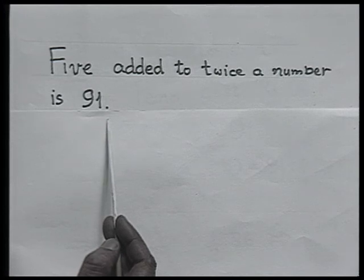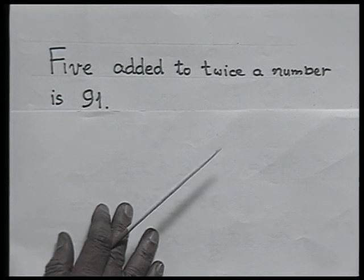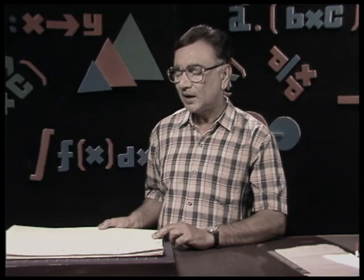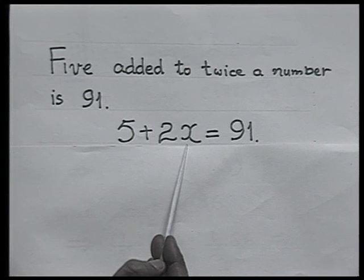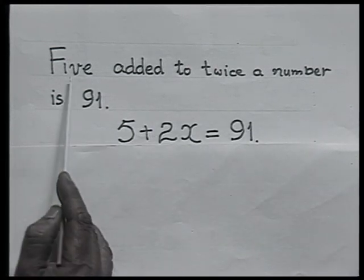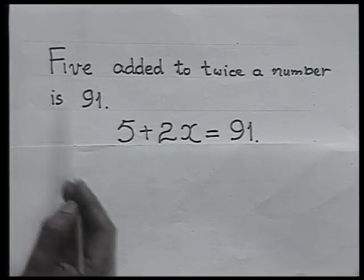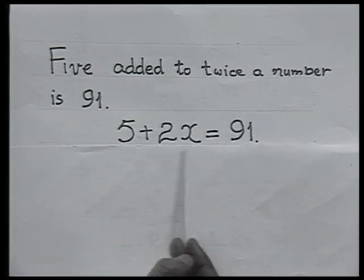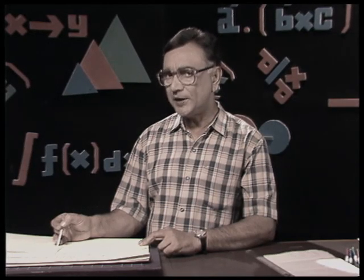Let us see how we solve it. The number is not known to me, so I take the number as x. Because we have to add — 5 added to twice a number is 91 — this statement has taken a mathematical form. The mathematical form of this statement is 5 plus 2x equals 91, and such things in mathematics we call linear equations.